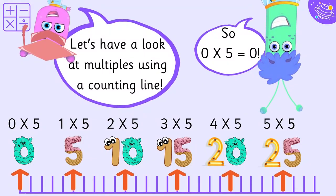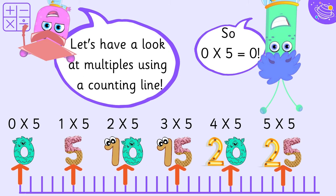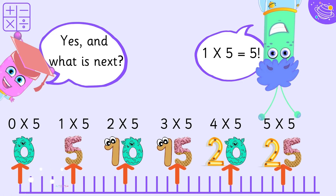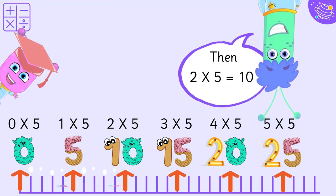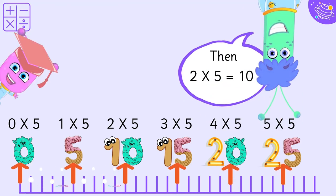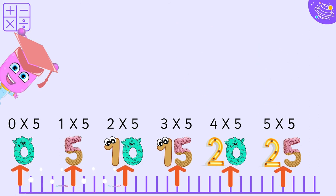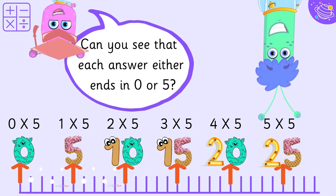Let's have a look at multiples using a counting line. Zero times five equals zero. One times five equals five. Then two times five equals ten. Can you see that each answer either ends in zero or five?